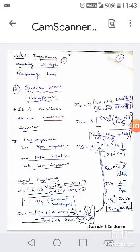First we are going to see the quarter wave transformer. It is considered as an impedance inverter. The impedance inverter converts low impedance into high impedance and high impedance into low impedance.